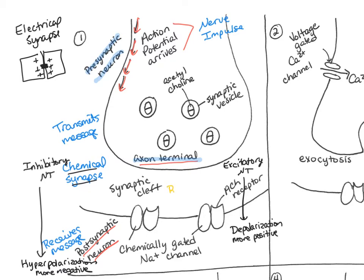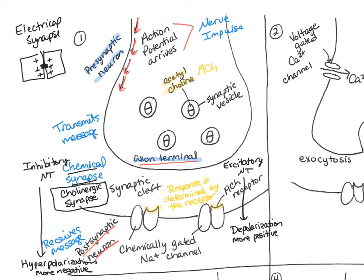The effect of a neurotransmitter on the postsynaptic membrane depends on the properties of the receptor, not the neurotransmitter itself. A cholinergic synapse is one where the presynaptic cell releases acetylcholine. We've seen this at the neuromuscular junction, where acetylcholine binds to sodium channels of skeletal muscles. Cholinergic synapses also occur in the central nervous system, in all neuron-to-neuron synapses in the peripheral nervous system, and at all neuromuscular and neuroglandular junctions of the parasympathetic division of the autonomic nervous system.